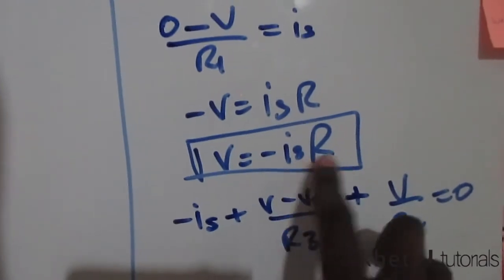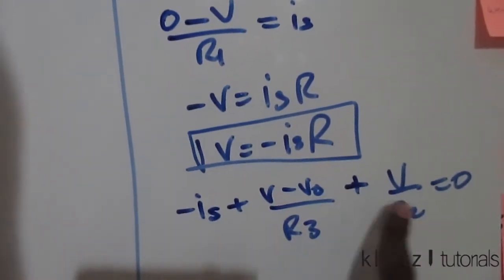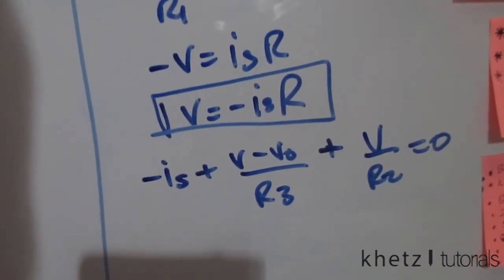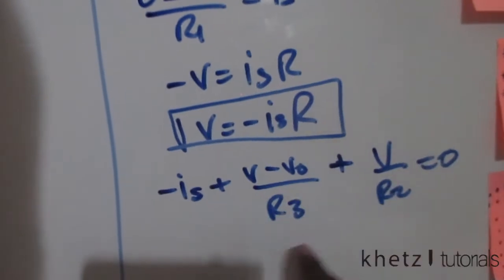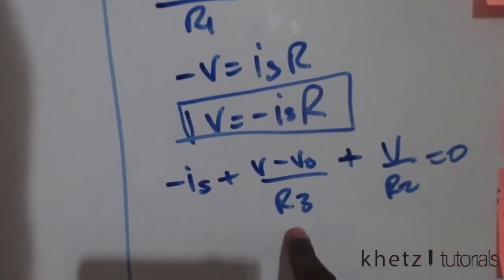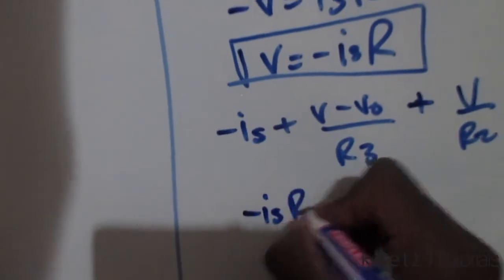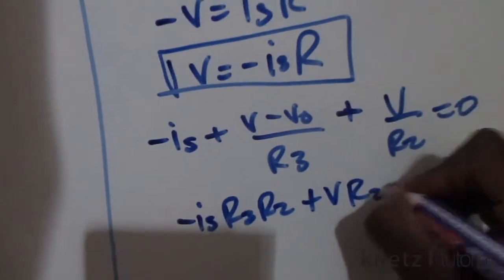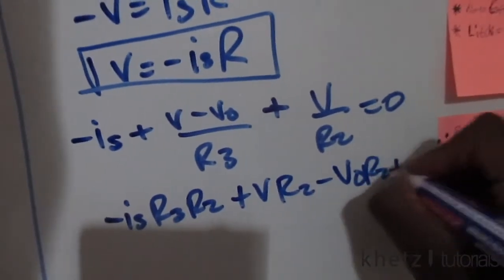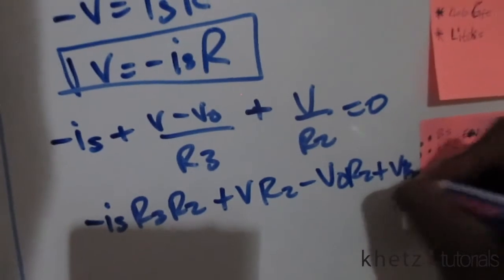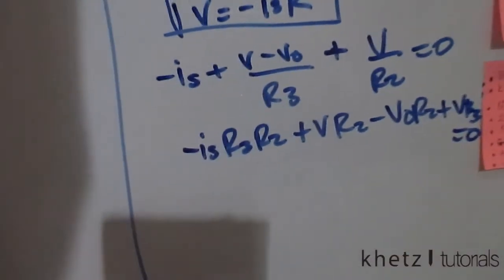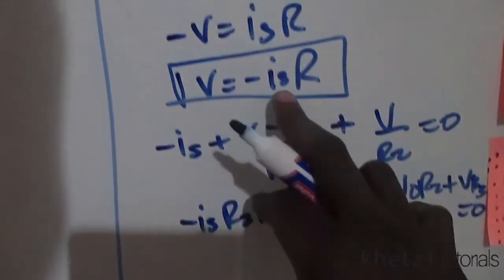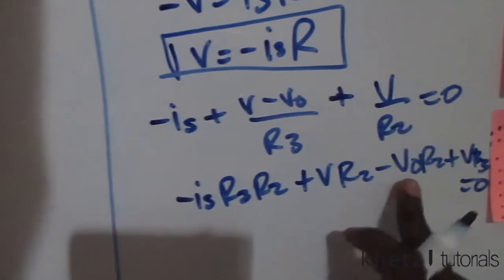We know V equals negative is·R, and we will substitute that shortly. For now let's multiply through by R2 times R3, giving: negative is·R3·R2, plus V·R2, minus vo·R2, plus V·R3, equals zero.